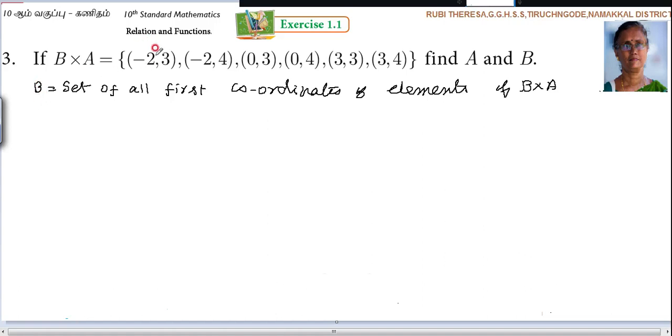So, the first coordinates - what are the elements? Minus 2. But minus 2 is repeated. You should not write it one more time. Only write the elements in a set one time. In a set, you write elements only once. You should not repeat elements. So, minus 2.